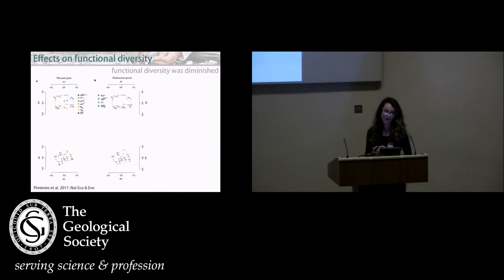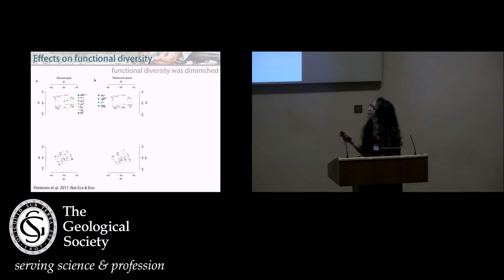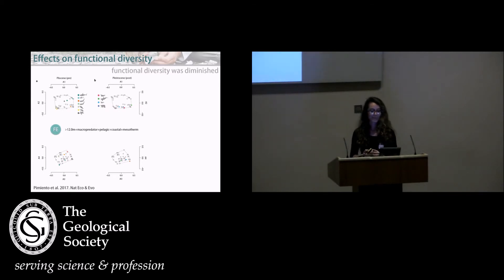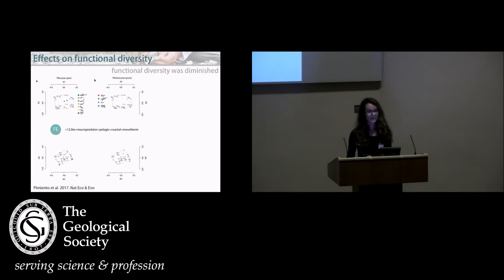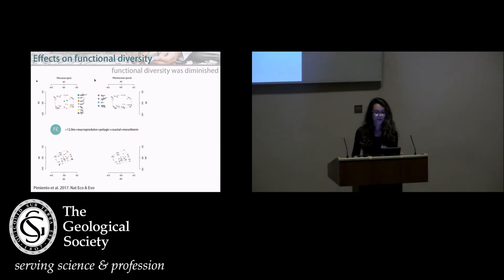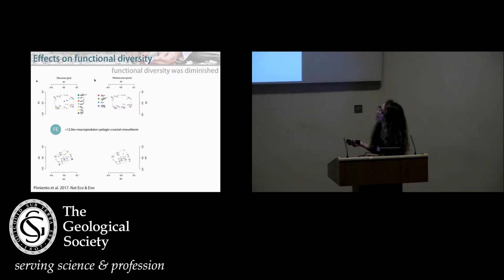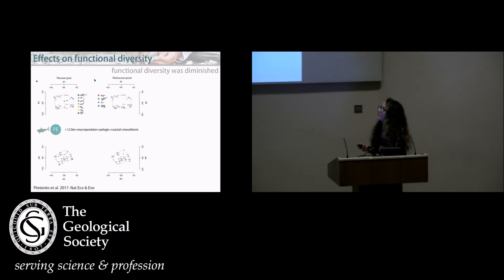This is the functional space for the Pliocene before the extinction, and for the Pliocene after the extinction. Each dot represents a functional entity, not a species. For example, one entity here represents all animals more than 12 meters in total length — macro predators, pelagic and coastal, and mesotherms. In this case, only one species fills this group: Megalodon.